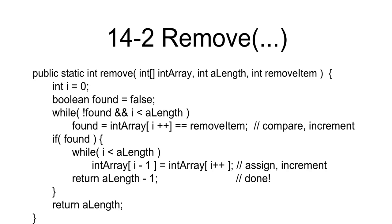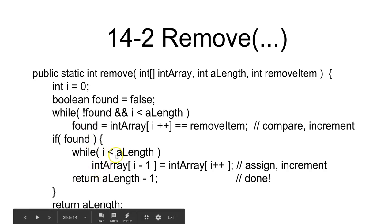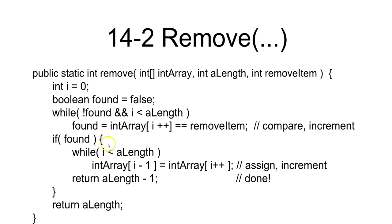If you have trouble you can go back to the video and copy the code - that's all good code. Once found is true, i is already incremented past the item's location. We don't care about what came before; we only care about shifting everything to the right of the found element: assign what's at position i to position i-1, shifting elements left over the removed element.